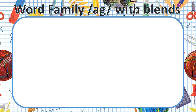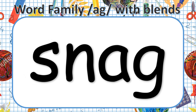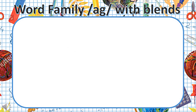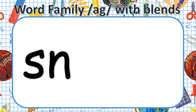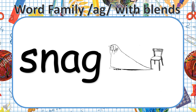The last word we're going to look at today is SNAG. Listen carefully — SNAG. Let's break up the word into the blend and the word family. In this word we use the SN blend with the letter N, and when we add the two sounds together they make the sound SN. Then we add the AG sound. I snag my blanket on the chair.